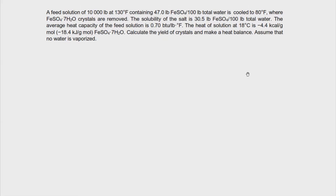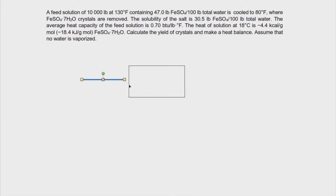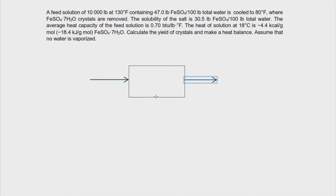Now let's have problem number 2. Compared to problem number 1, this problem doesn't have evaporation. So if you think of the equipment used in this process, this could be a Swenson Walker crystallizer. The balance would be very easy — you just have the feed, the crystals, and the liquor. You can also add another stream for water, which is the cooling water.